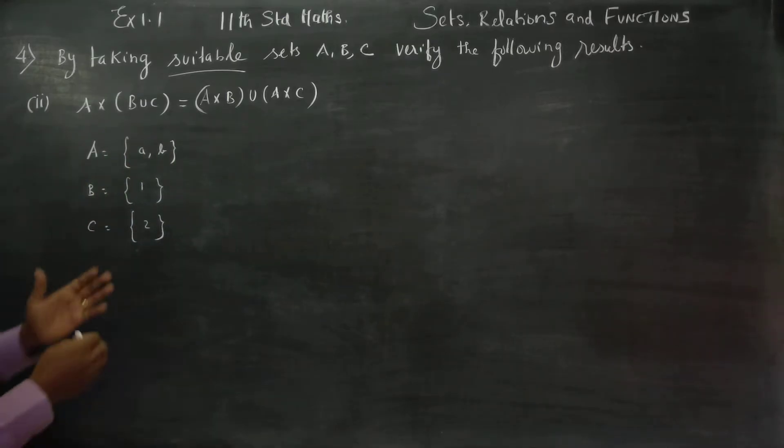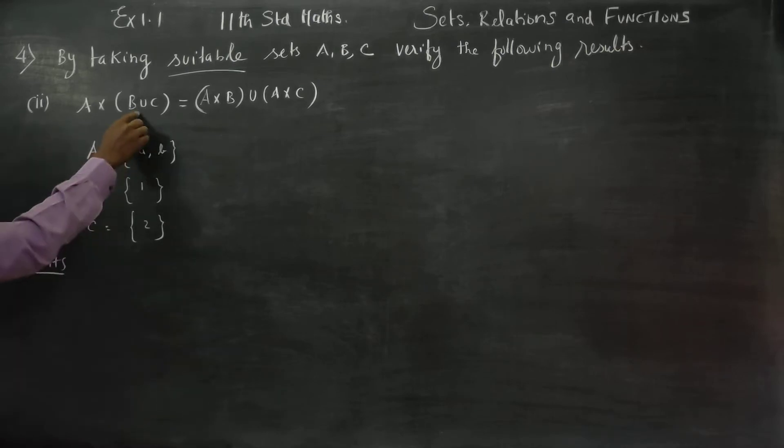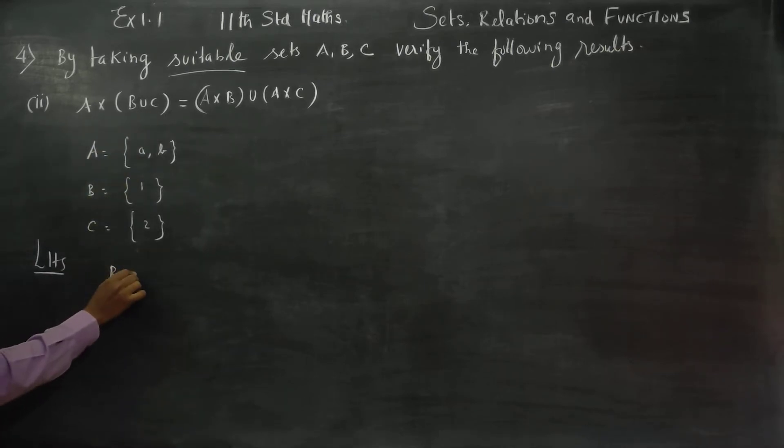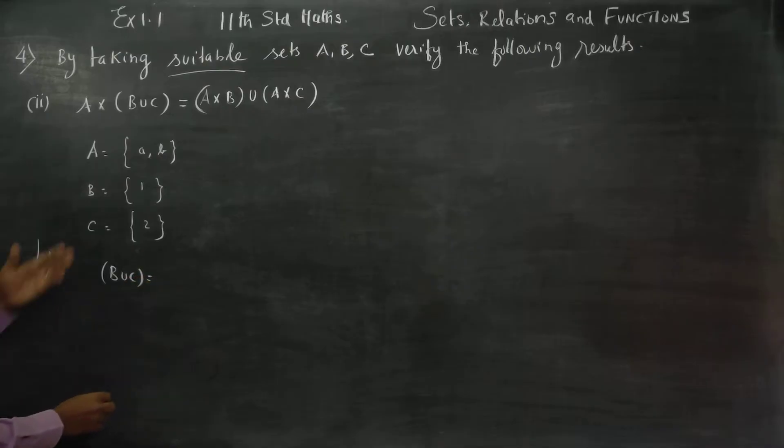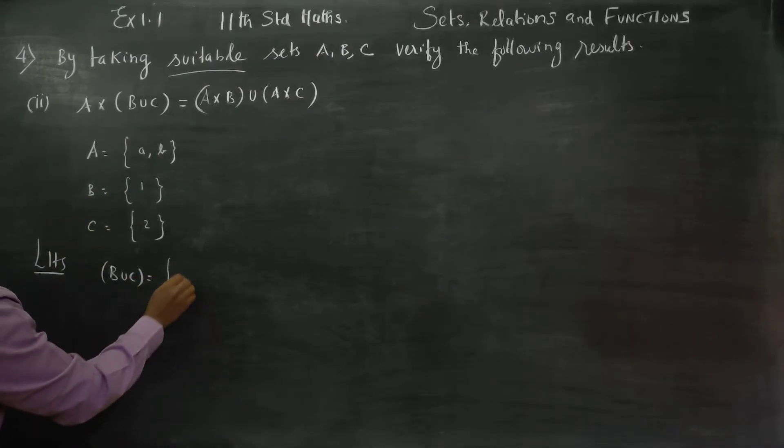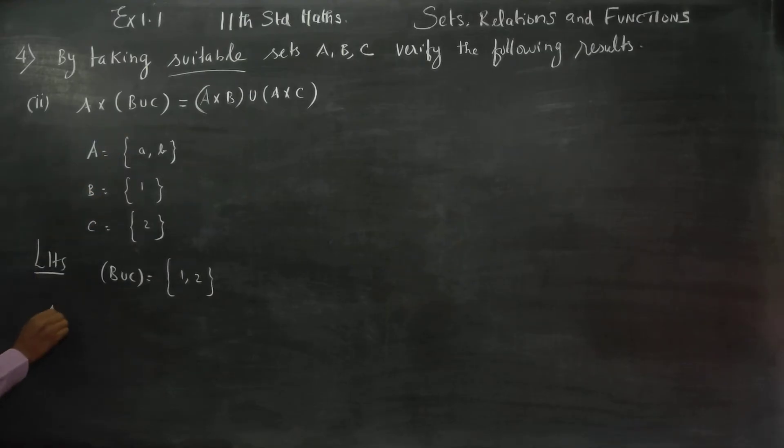I am starting the LHS. First I want the bracket, which is B union C. B union C will be {1, 2}. Then I want A cross B union C.